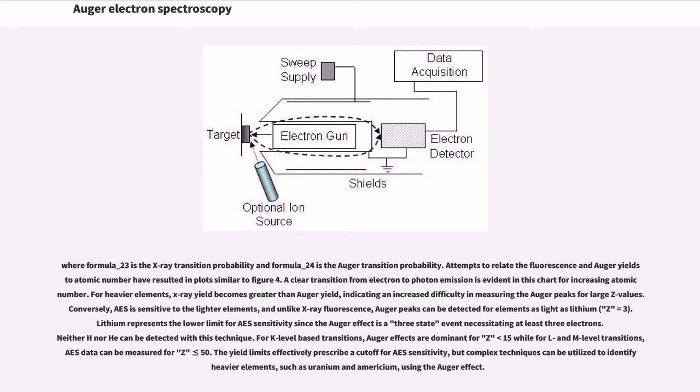A clear transition from electron to photon emission is evident in this chart for increasing atomic number. For heavier elements, X-ray yield becomes greater than Auger yield, indicating an increased difficulty in measuring the Auger peaks for large Z values. Conversely, AES is sensitive to the lighter elements, and unlike X-ray fluorescence, Auger peaks can be detected for elements as light as lithium (Z = 3). Lithium represents the lower limit for AES sensitivity since the Auger effect is a three-state event necessitating at least three electrons. Neither H nor He can be detected with this technique.